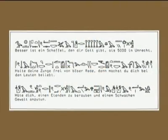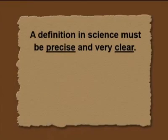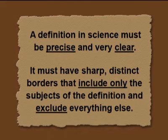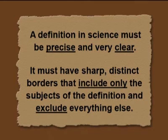Nowadays the hieroglyphics are understood. On this picture you see a translation made by computer. The input was a German text and the output by a plotter was a translation into hieroglyphs. It is possible because we understand this language and therefore translations are possible. A definition in science must be precise and very clear — it must have sharp, distinct borders that include only the subjects of the definition and exclude everything else.